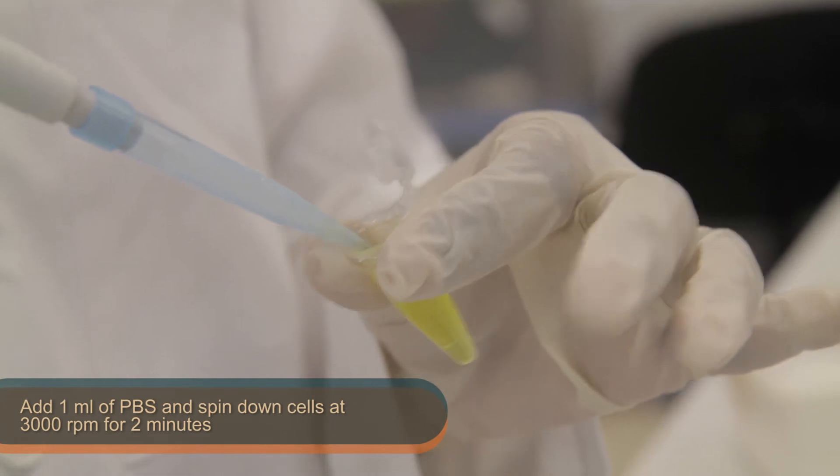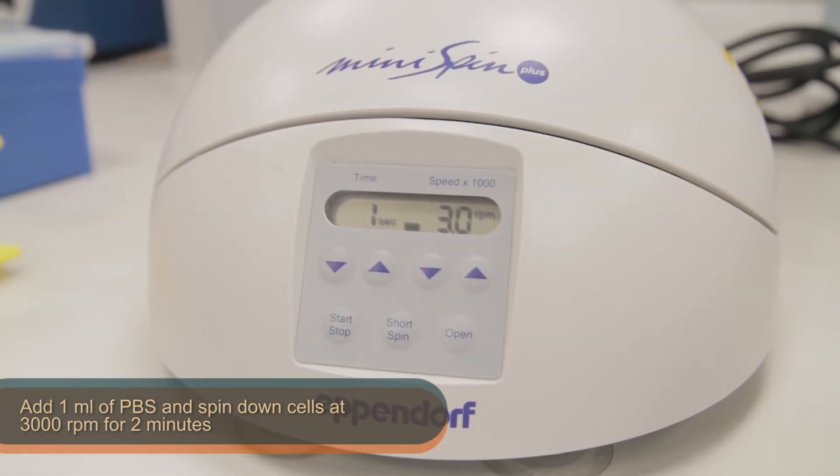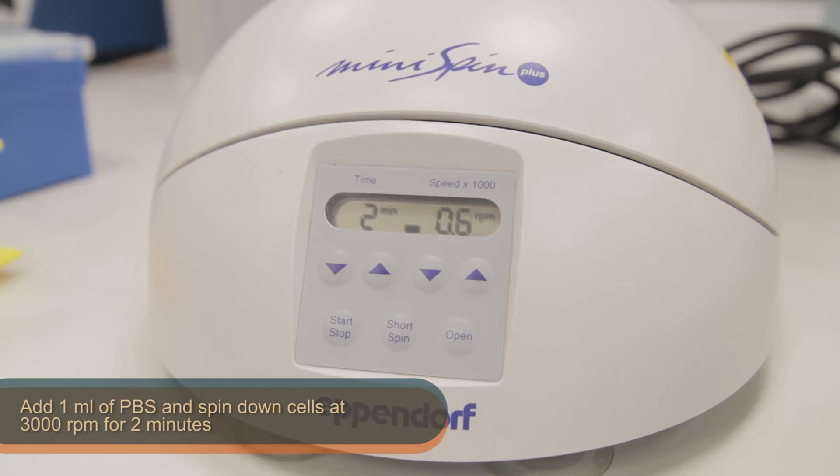Next, add 1 ml of PBS and spin down the cells at 3000 rpm for 2 minutes.